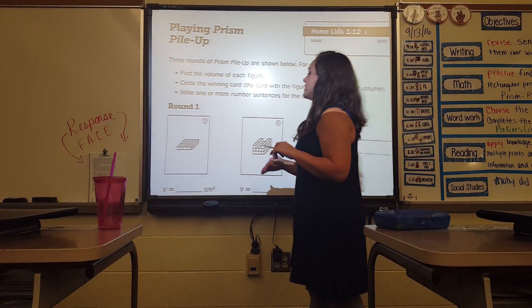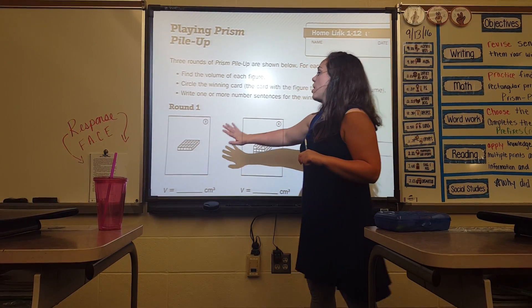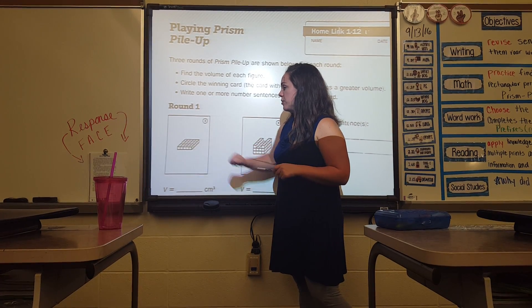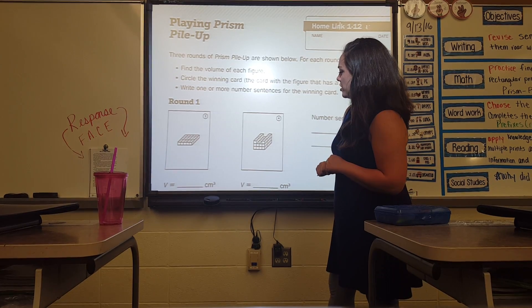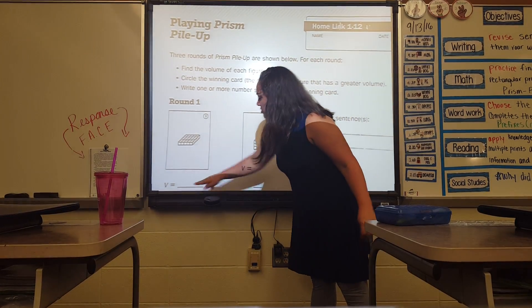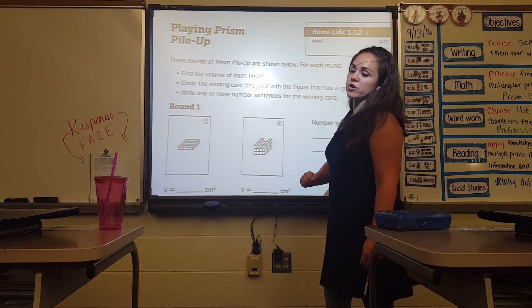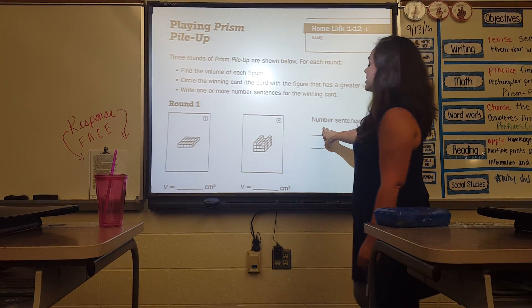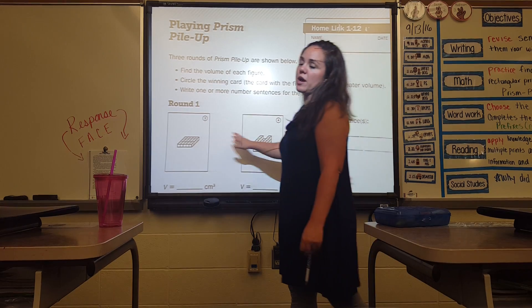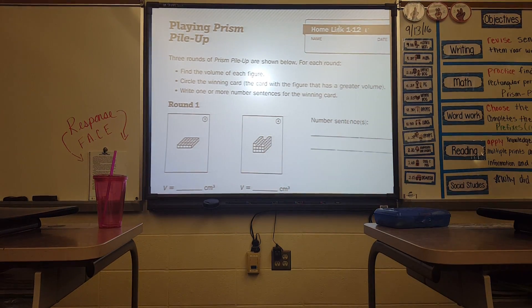What the students did in class is they had partners and they flipped over a card. This is player one's card, this is player two's card. Then they each had to find their own individual volume. You write the volume on the line below. Whichever card has the highest volume, you circle it and write a number sentence for it. I'm going to show you how to do the first two right here.